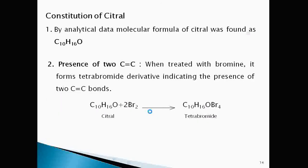Terpenoids are unsaturated compounds. To know the number of double bonds, it is treated with bromine. It forms tetrabromide derivatives. Two bromine molecules are added and it gives tetrabromide derivative. This indicates the presence of two double bonds in citral.